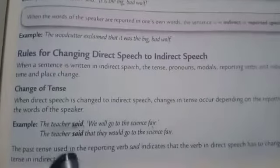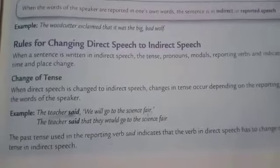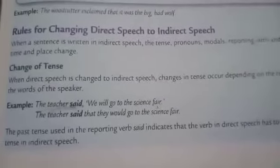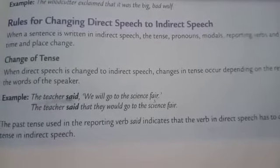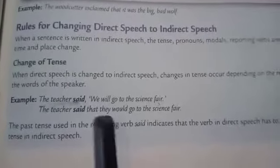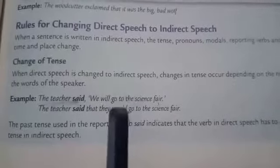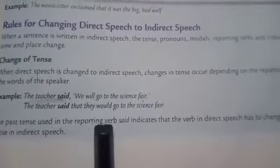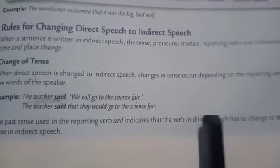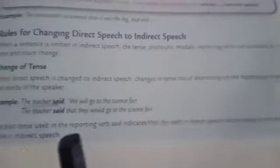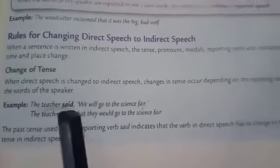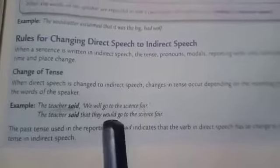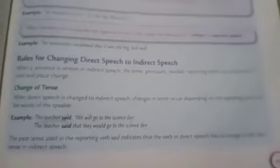Let's have one example here. The teacher said, 'We will go to the science fair.' The teacher said that they would go to the science fair. Since 'said' is used, we changed the future tense: 'will' is changed to 'would.' Would is the past of will. The past tense used in the reporting verb 'said' indicates that the verb in direct speech has to change to past tense in indirect speech.